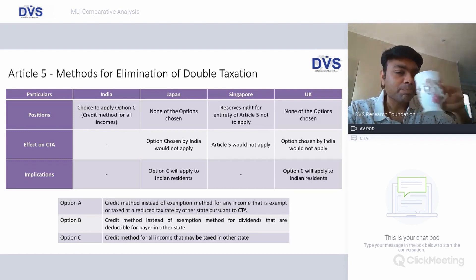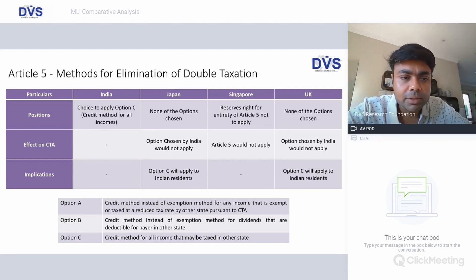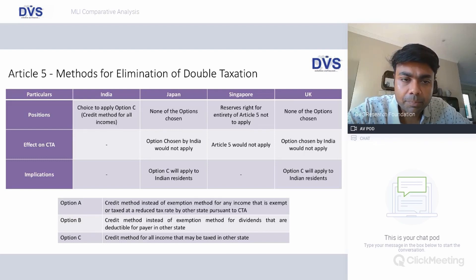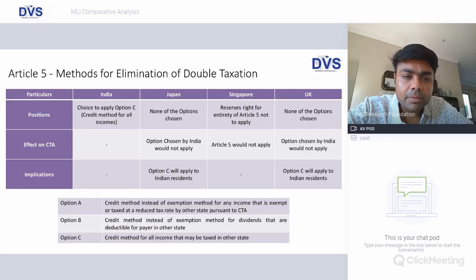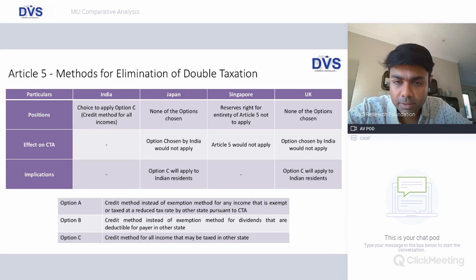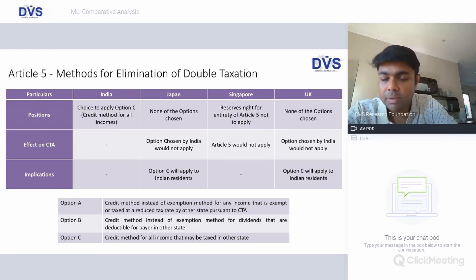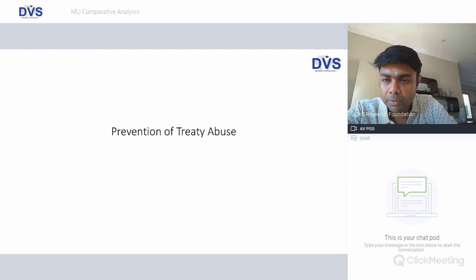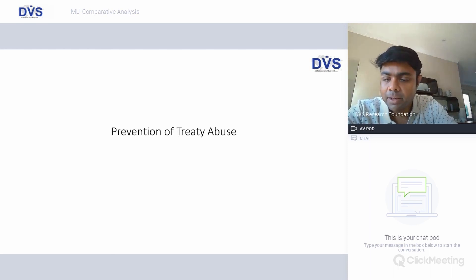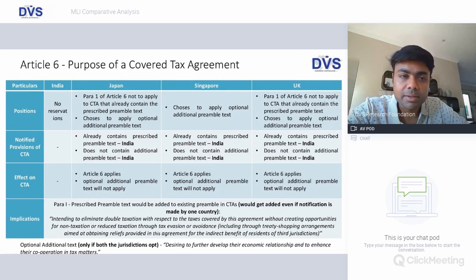Article 5 deals with methods for elimination of double taxation. India's position is to apply Option C, which is the credit method for all incomes. Japan has not chosen any option, Singapore reserves the right not to apply this article at all, and UK also has chosen none of the options. Option C — the credit method — will apply to Indian residents as far as Japan and UK are concerned. Since Singapore has reserved not to apply, MLI will not have any impact on the India-Singapore DTA for this article, and you will go only with the treaty provisions.